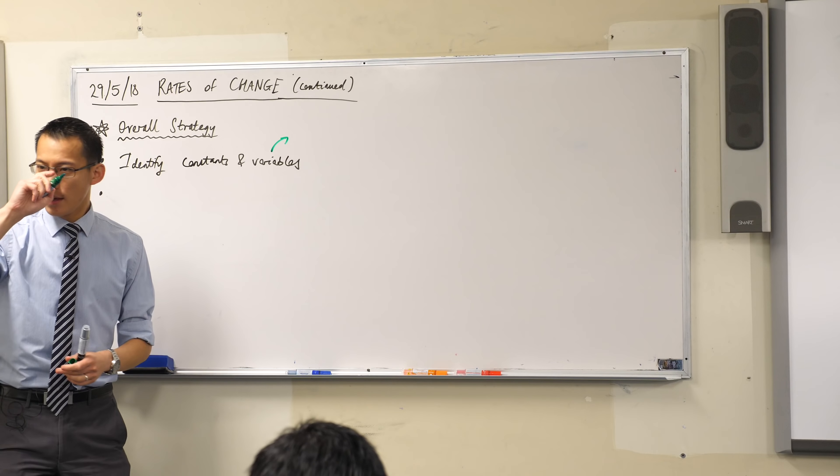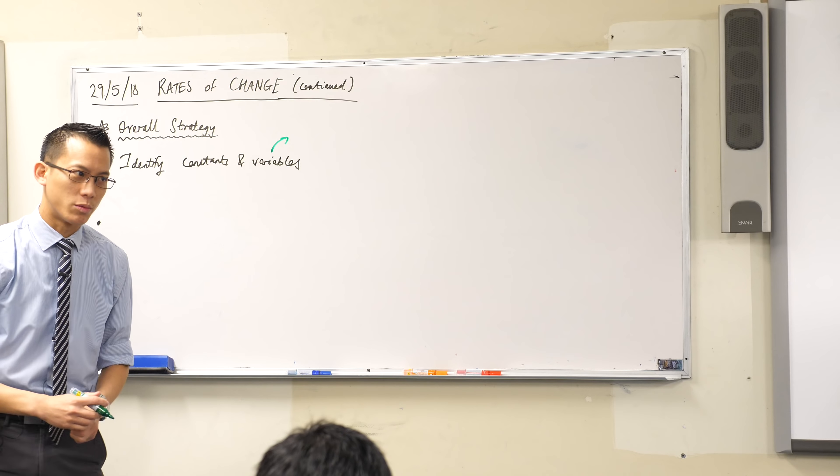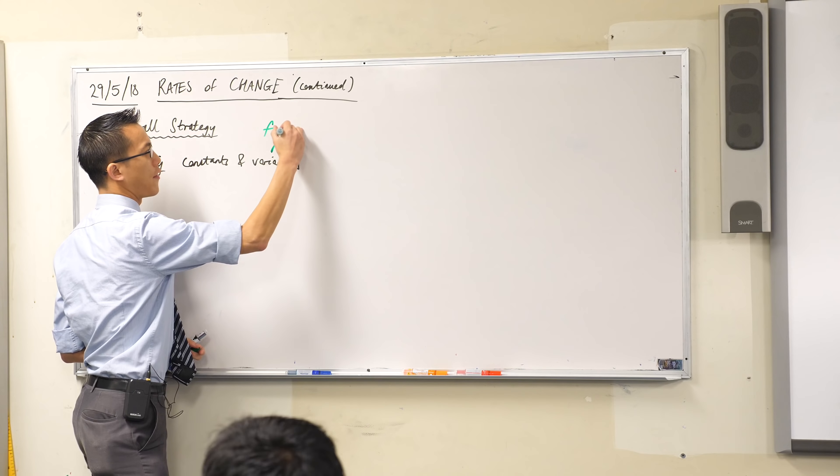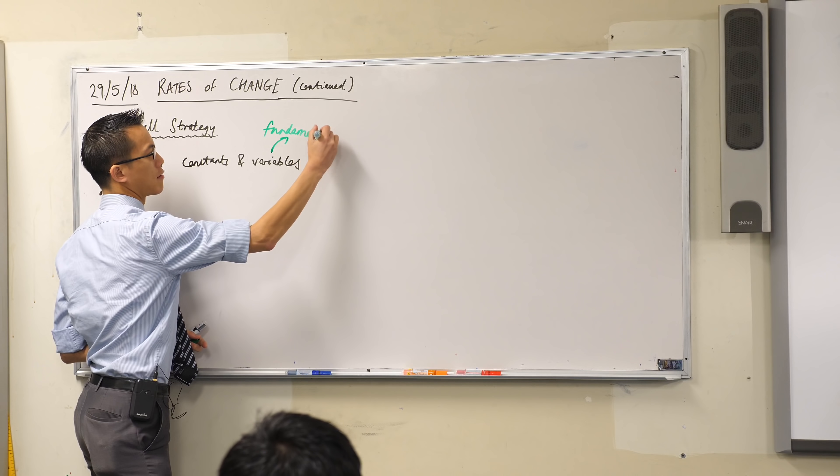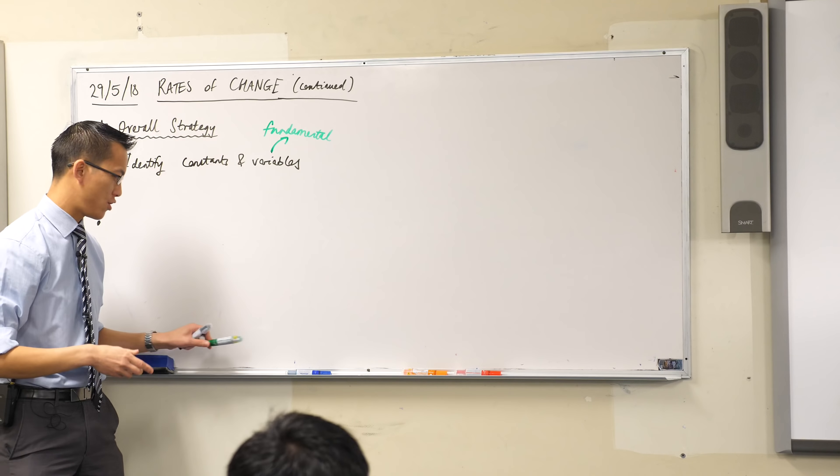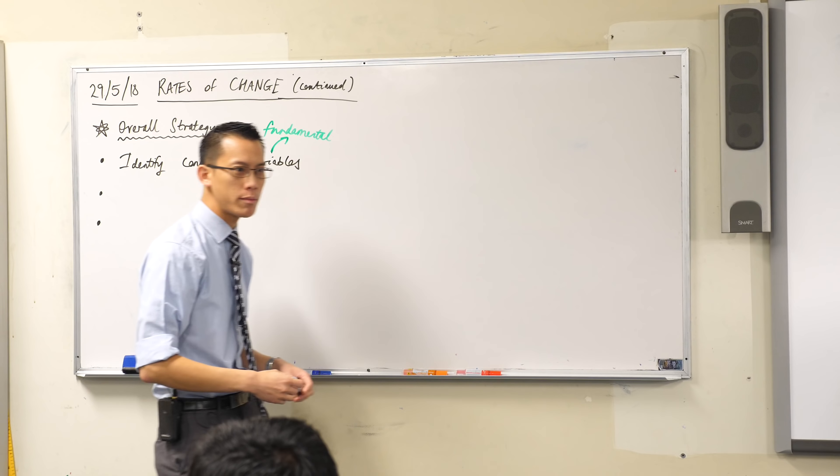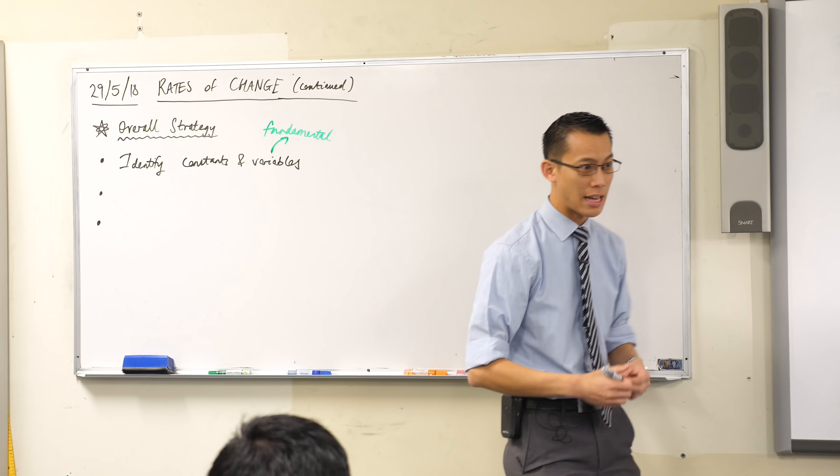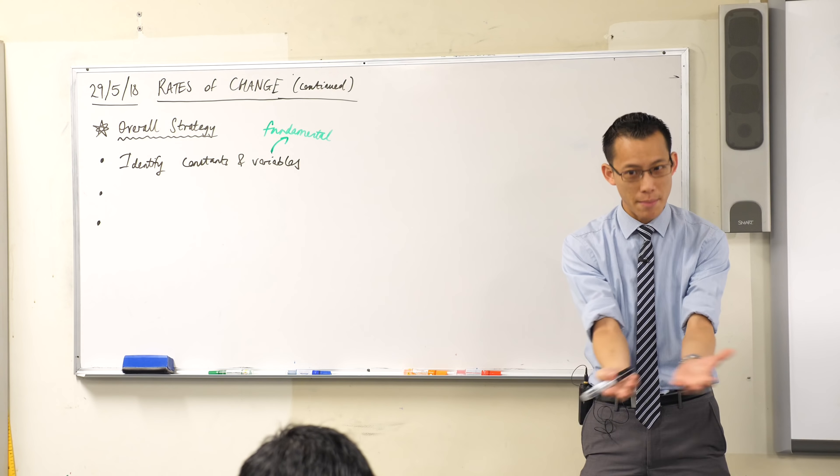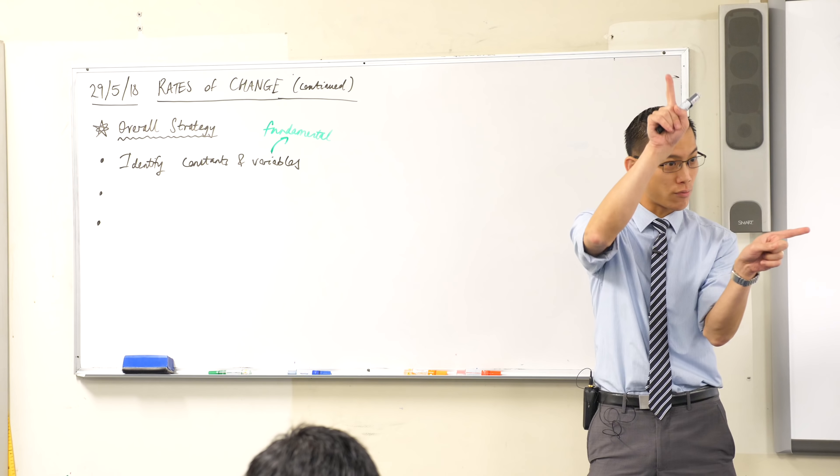I want to make a special note that not all variables are created equal, right? Some variables are more fundamental than others. They lead to the others changing, right? So in the case of the sphere, it would probably be the radius. That's the most important variable. It's the fundamental, the basic one, and it leads to all of the rest of them, okay?